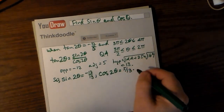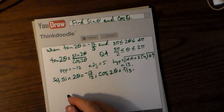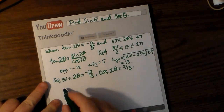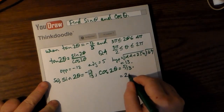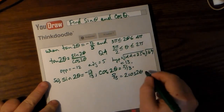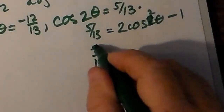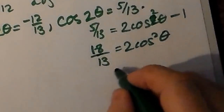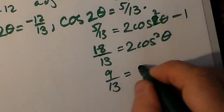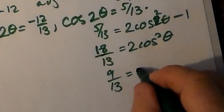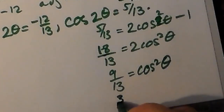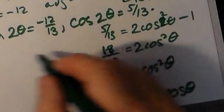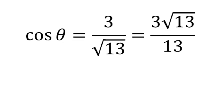So sin 2θ is therefore negative 12/13, and cos 2θ must be 5/13. Working with cos 2θ = 5/13, we set that equal to 2cos²θ minus 1, and bring the negative 1 over by adding 1 to both sides, giving 18/13. Dividing by 2 gives 9/13 equals cos²θ. Taking the square root, since 13 is prime on the bottom, we end up with cosθ = 3/√13, or 3√13/13.